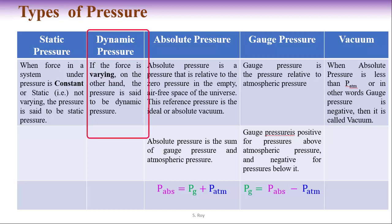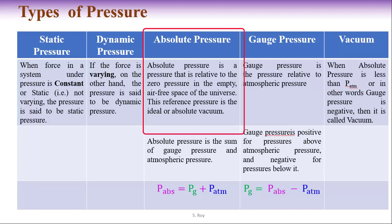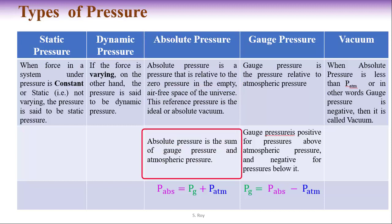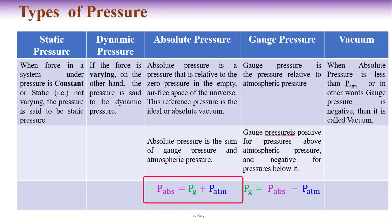What is dynamic pressure? If the pressure is varying with respect to time, the pressure is said to be dynamic pressure. Next, absolute pressure: absolute pressure is a pressure relative to the zero pressure in the empty, air-free space of the universe. This reference pressure is the ideal or absolute vacuum. Absolute pressure is the sum of gas pressure and atmospheric pressure, so absolute pressure equals gas pressure plus atmospheric pressure.